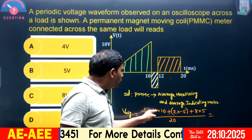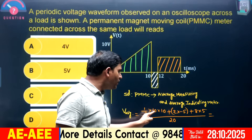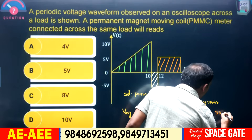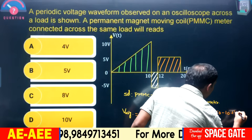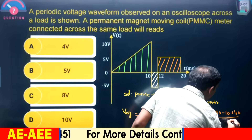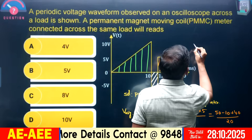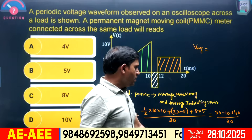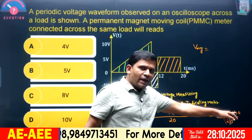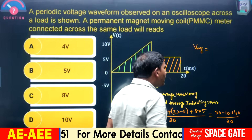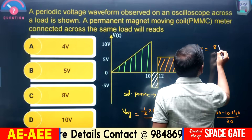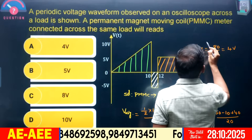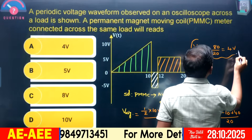So we have: 10 × 10 = 100, divided by 20. Then 50 minus 10, plus 40 divided by 20. V_average equals (50 + 40 − 10) / 20 = 90 − 10 = 80, and 80 / 20 = 4 volts. Therefore the average voltage equals 4 volts.